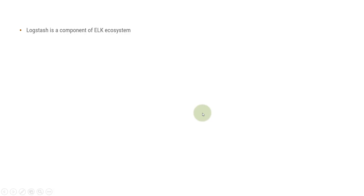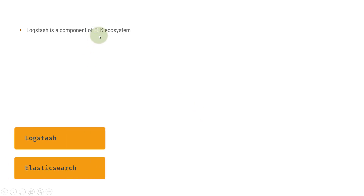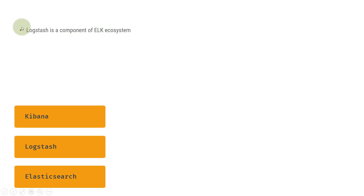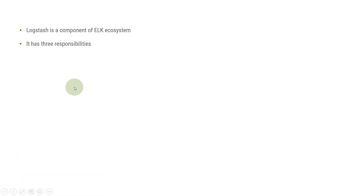Logstash is a component of the ELK ecosystem. E stands for Elasticsearch, L stands for Logstash, and K stands for Kibana. So the L component in the whole ELK ecosystem is Logstash.